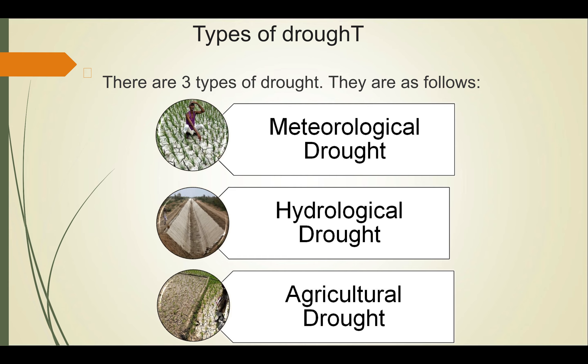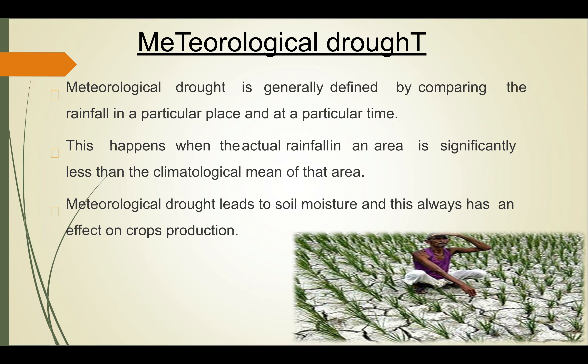Meteorological drought is generally defined by comparing the rainfall at a particular place and particular time. It occurs when the actual rainfall in an area is significantly less than the climatological mean of that area. Meteorological drought leads to soil moisture deficiency and always has an effect on crop production. It usually precedes other kinds of drought, and intensity and duration are key characteristics. A year is considered a drought year when the area affected by moderate or severe drought is more than 20% of the total area of the country.